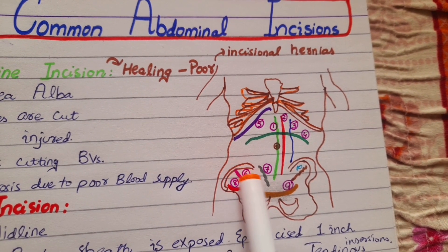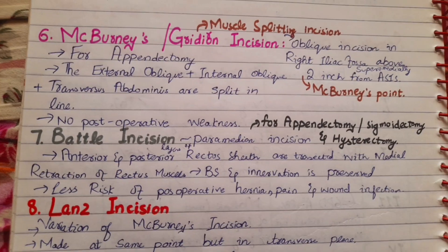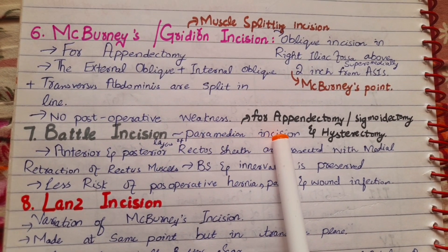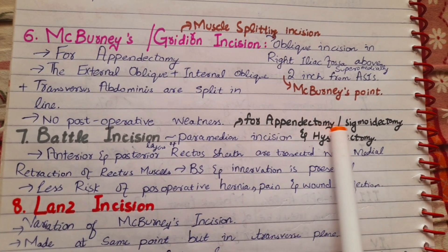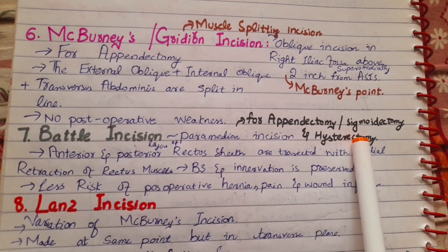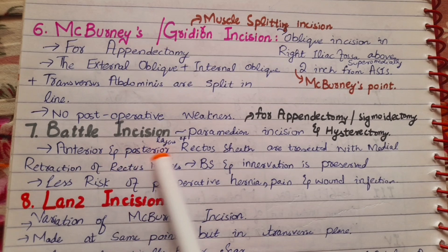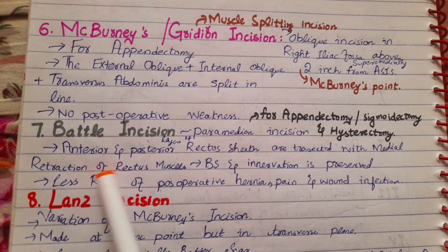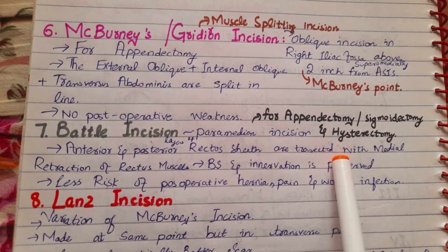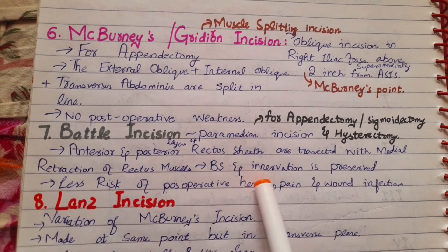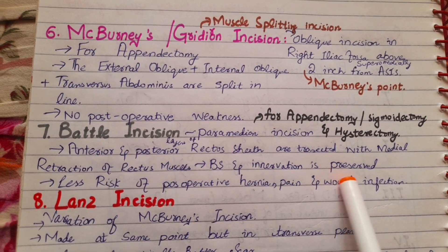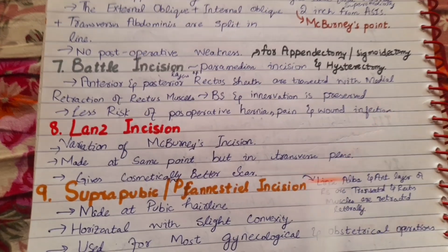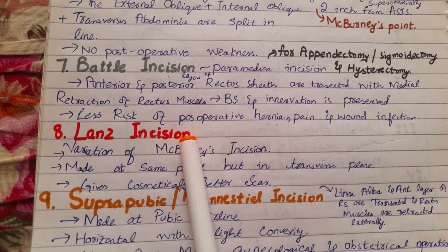Next we have the Battle's incision. It is a paramedian incision done for appendectomy, sigmoidectomy, and hysterectomy. In this case, the anterior and posterior layers of the rectus sheath are transected with medial retraction of the rectus muscle. Blood supply and innervation of the rectus muscle are preserved, and it has less risk of post-operative hernia, pain, and wound infection.